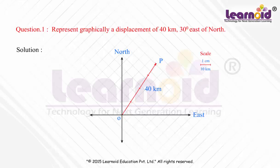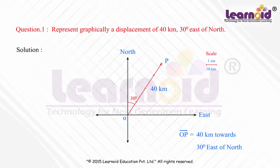Now, the direction given is 30 degrees east of north, so we will measure the angle from north towards east. Hence, vector OP represents the displacement of 40 km, 30 degrees east of north.